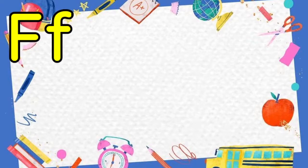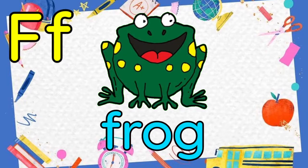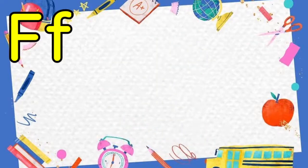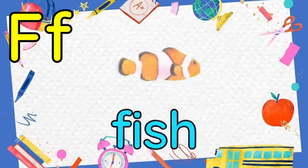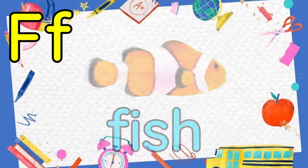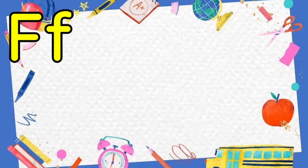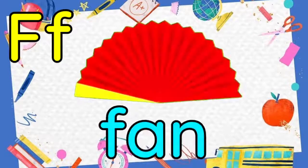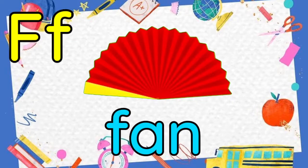Now, let's go to the letter F. F is for frog. One more time — F, frog. F is for fish. One more time — F, fish. And F is for fan. One more time — F, fan.